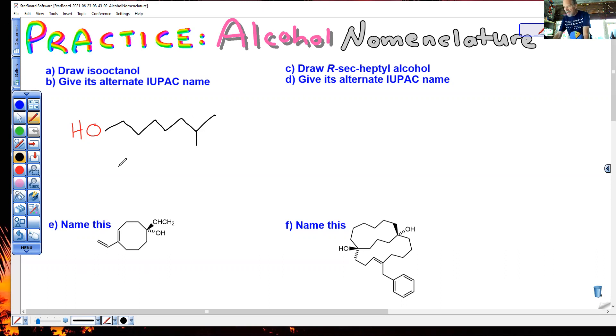IUPAC says find the longest chain. Keep the alcohol on the lowest possible number. One, three, five, six, seven - one heptanol. And it's got a methyl group on six. 6-methyl-1-heptanol.